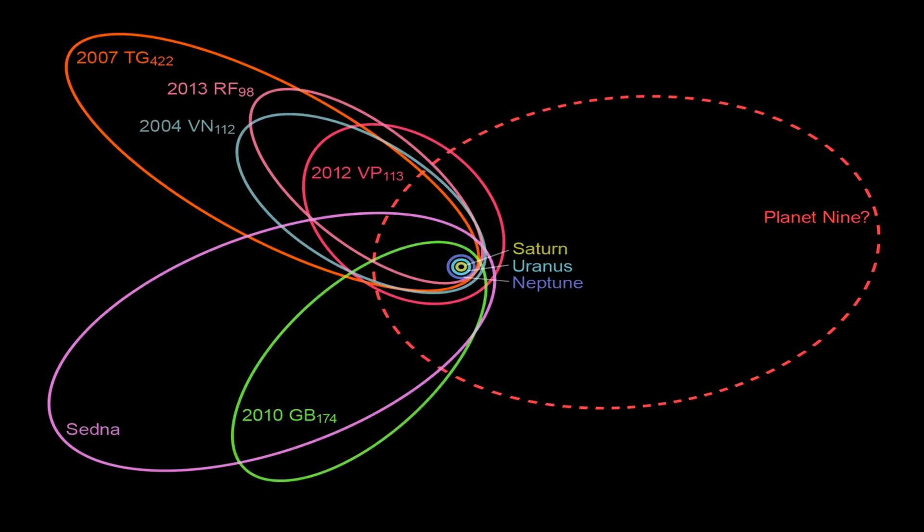Scientists predict that Planet 9 is much further away from the sun than Neptune. Neptune is around 4.5 billion kilometers away from the sun, where Planet 9 is around 100 billion kilometers away from the sun.